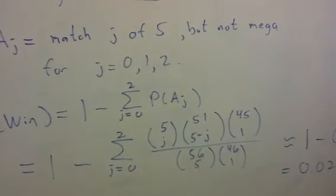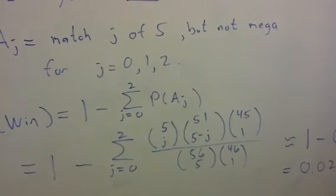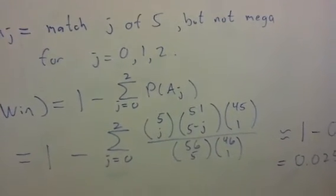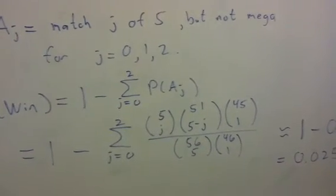And finally, they need to not draw the Mega for A sub j to occur, and that's where the 45 choose 1 comes from. And then the denominator, of course, is just all the possible draws that they can make.